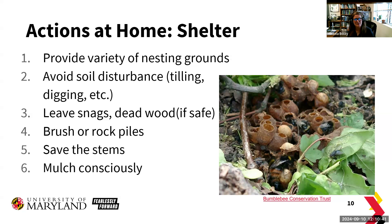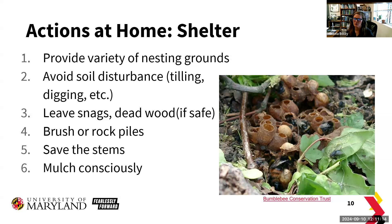Leaving snags or dead wood — if it's safe — is really beneficial, particularly for beetles. Even brush or rock piles and stems can be beneficial. About 30% of our native bees are cavity-dwelling, nesting in holes in wood or in the hollow stems of plants, which is also where they overwinter. What I like to say is: a lot of people cut back all their perennials in the fall, and this is the worst time to do it — native bees are overwintering in those stems. If you remove them, they don't get a chance to emerge in the spring and you've lost your population.